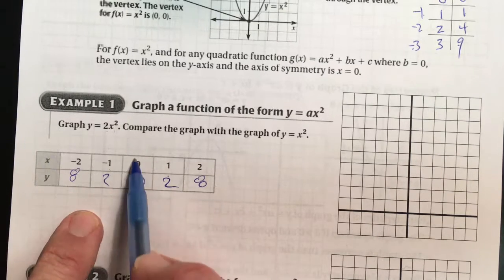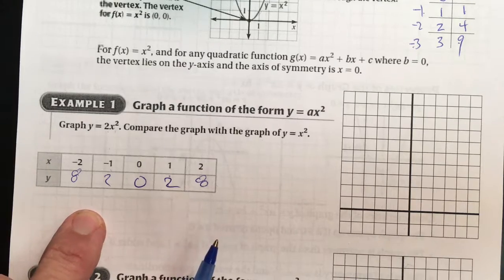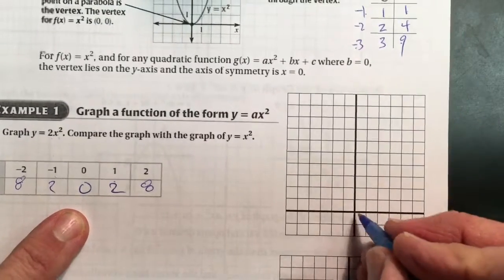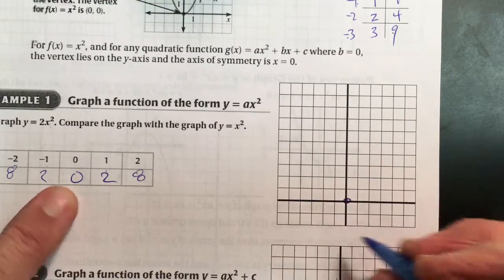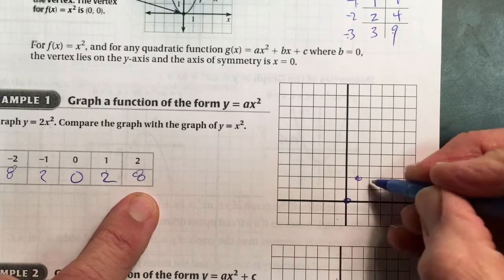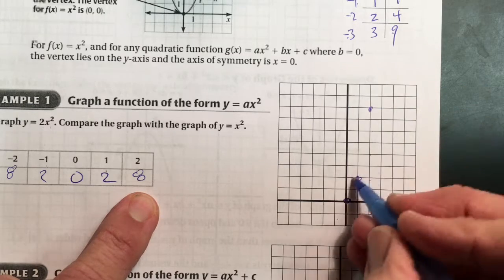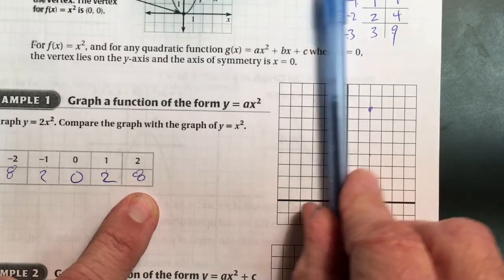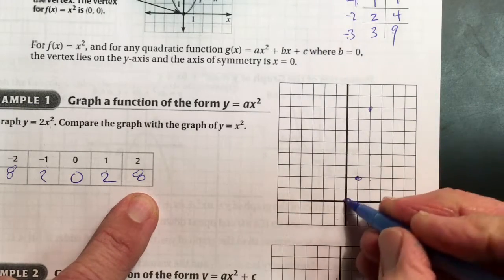You can see the symmetry around this vertex point. Graphing that quickly, we'll start with 0, 0, then 1, 2, and 2, 8. I like to mirror these across. This is the axis of symmetry here around the y-axis. There's the vertex.